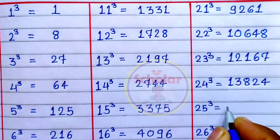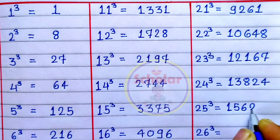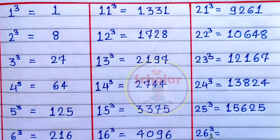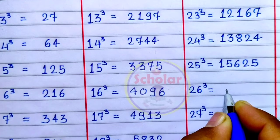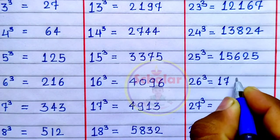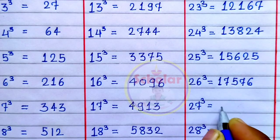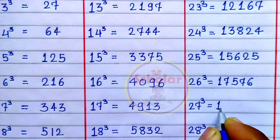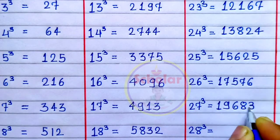Cube of 25 is 15625. Cube of 26 is 17576. Cube of 27 is 19683.